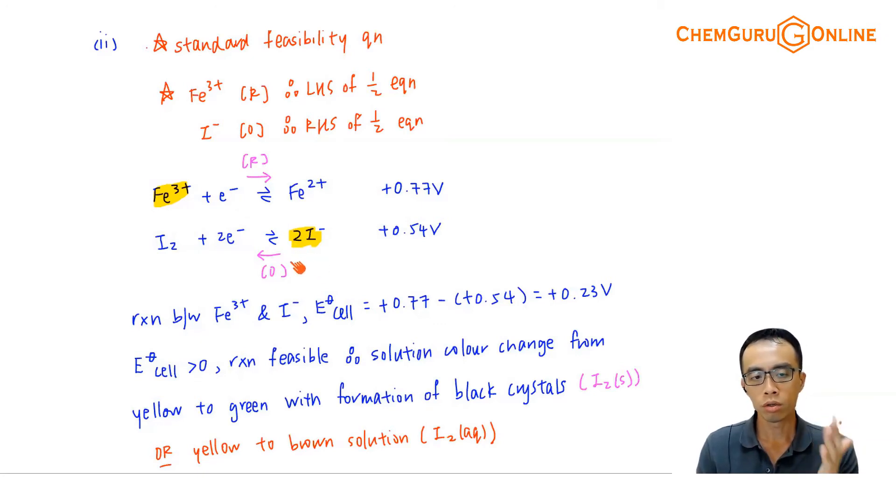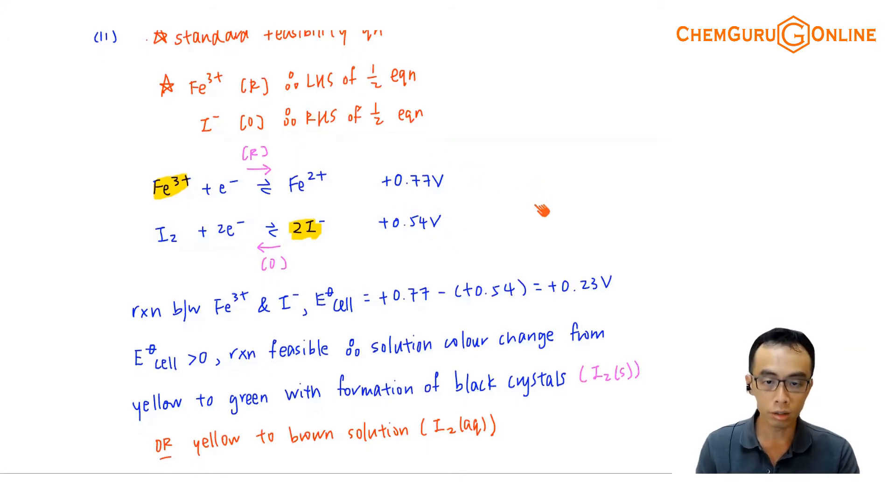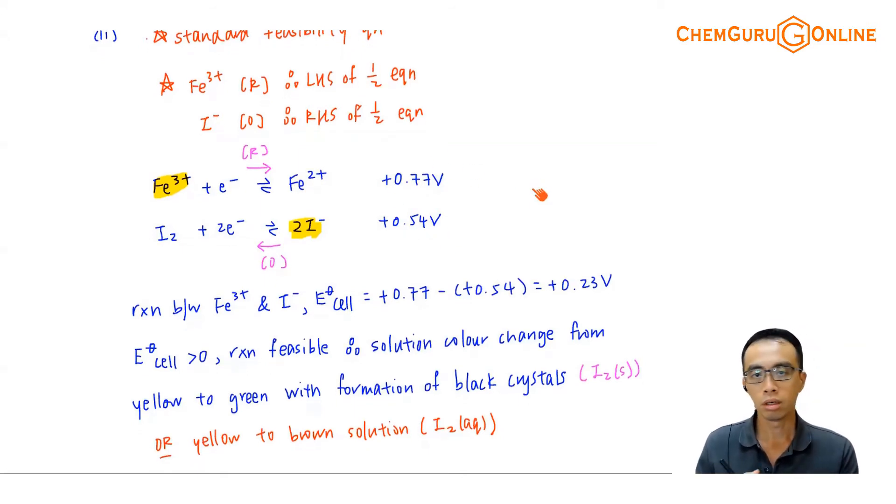we don't decide who is oxidized or reduced by looking at the E value anymore. Because this is not an electrochemical cell question. Only when we do electrochemical cell, where the system can be both oxidized or reduced, then we will let the system choose who want to be oxidized will be oxidized, who wants to be reduced will be reduced. Because all the components that can be oxidized and reduced are there.